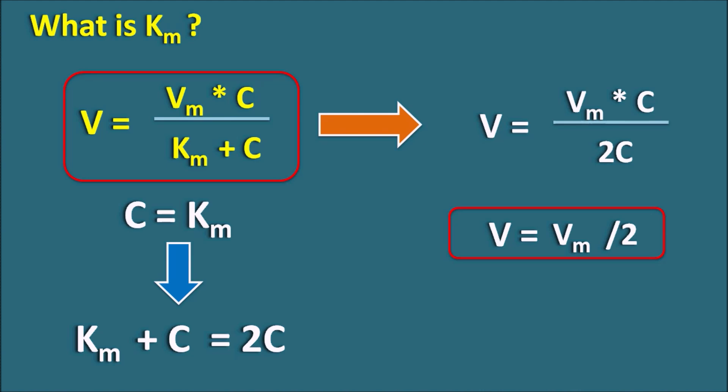In this way, the Michaelis-Menten equation can describe the kinetics of first order, mixed order, as well as zero order. This equation is highly useful in reactions involving non-linear kinetics — for example, enzymatic reactions, transport of molecules through carriers, and metabolism of drugs — all of which are capacity limited. Whenever their capacity is limited, they can show mixed-order kinetics, which can be described by the Michaelis-Menten equation.